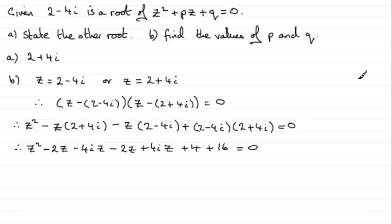So if we simplify this, as I said earlier, you can see that the minus 4iz cancels with that one, giving us 0. So what I end up with here is z squared, and then we have minus 2z, minus another 2z, so that's going to be minus 4z. And then the 4 plus the 16 is going to be plus 20, and that equals 0.